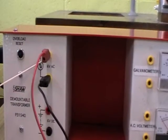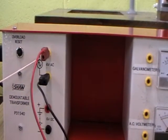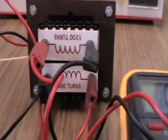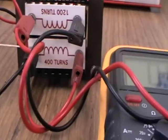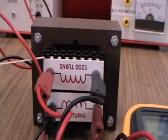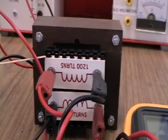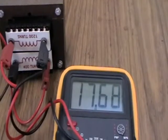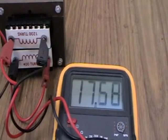If VP equals 6 volts AC, NP equals 400 turns, and NS equals 1200 turns, then VS equals 18 volts.